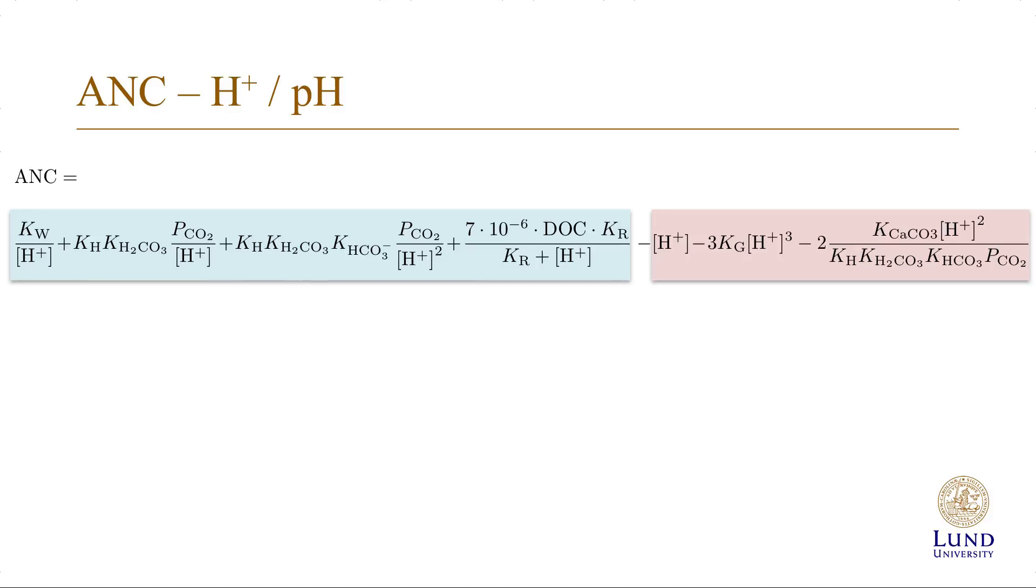To make the calculation, the equation we have to solve is ANC equals a series of expressions. Where the first one represents the OH concentration, the second one the bicarbonate concentration, the third one the carbonate concentration, the fourth one R minus, then we have H plus, aluminum 3 plus, and finally the calcium concentration.